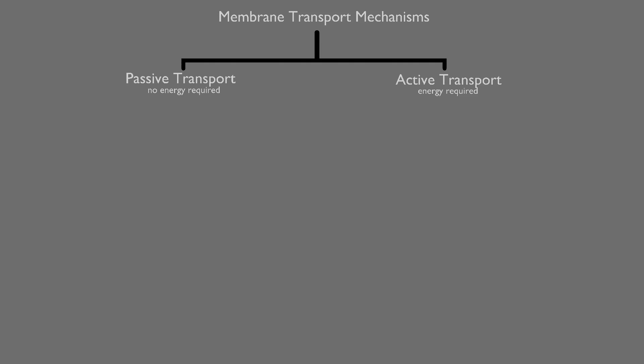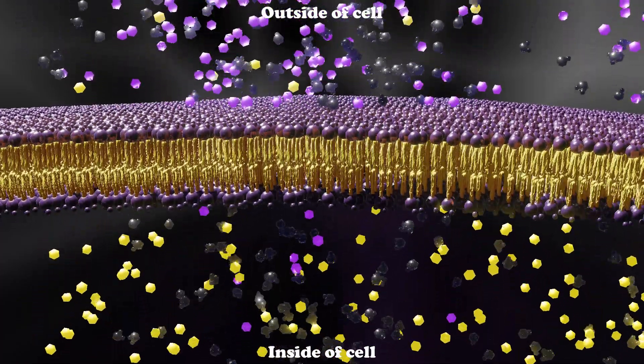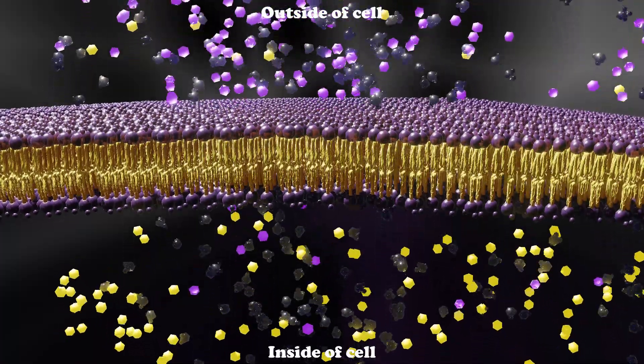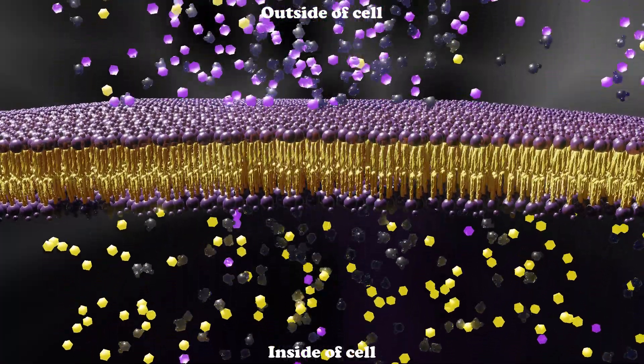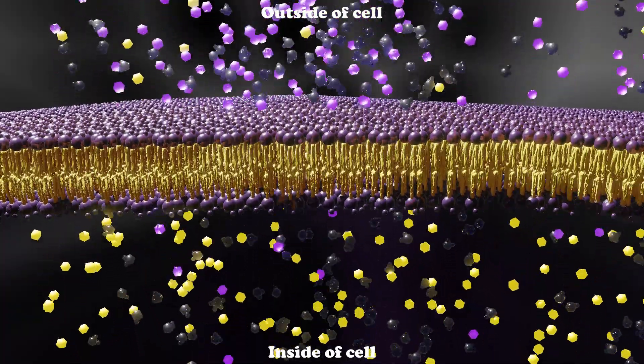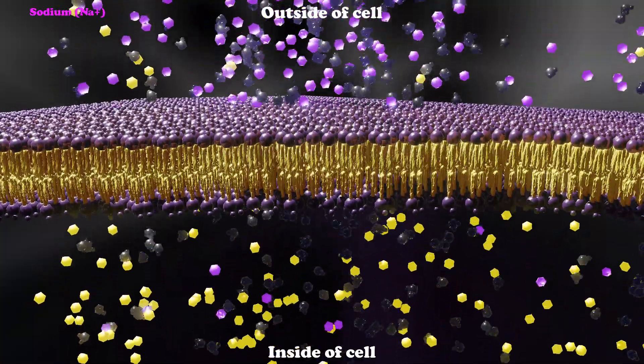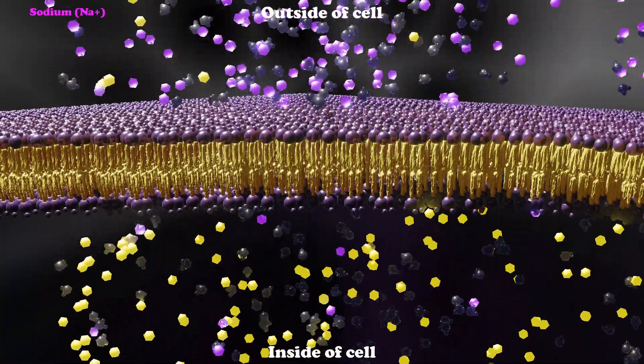To look at an example of this, we have a scenario set up here with two different ions. And just a quick note, ions are hydrophilic, which means they are impermeable unless they have a protein. The pink ions here are sodium and the yellow ions are potassium.